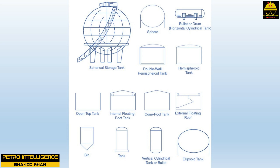Tanks can be divided into four general categories: atmospheric tanks, low-pressure tanks (0 to 2.5 PSIG), medium-pressure tanks (2.5 to 15 PSIG), and high-pressure tanks (above 15 PSIG). This picture shows the different types of tanks found in the chemical processing industry.